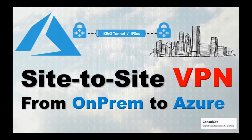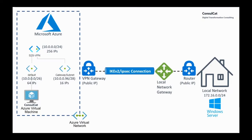Hi, my name is Sylvain. In this video I will show you the 10 steps to connect your on-premise environment to Microsoft Azure. On the right side of the screen we see our local on-prem environment, and on the left we see our Microsoft Azure environment, which we are going to use as an extension of our local on-prem environment through the use of this site-to-site VPN connection that we're going to create.